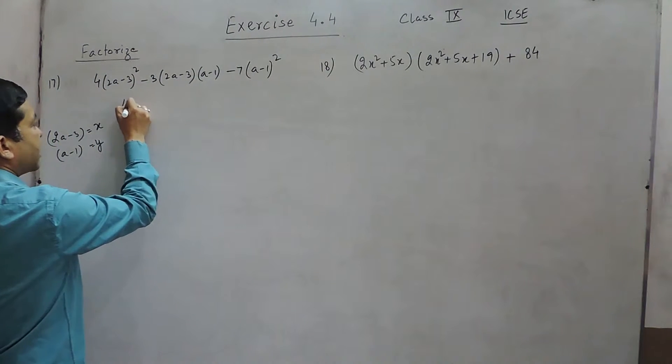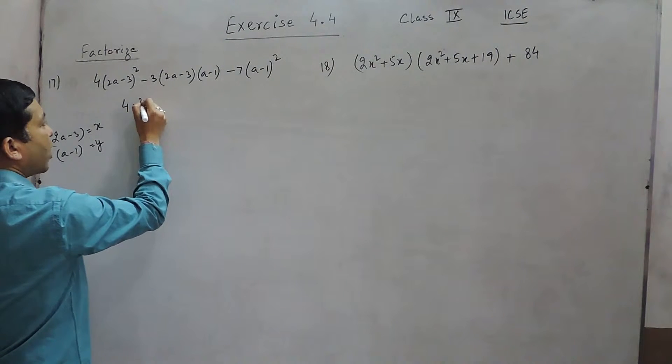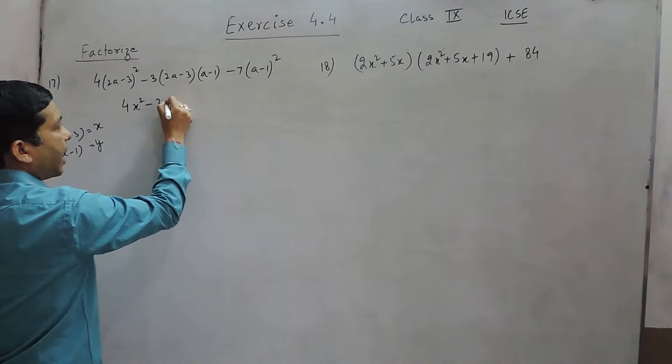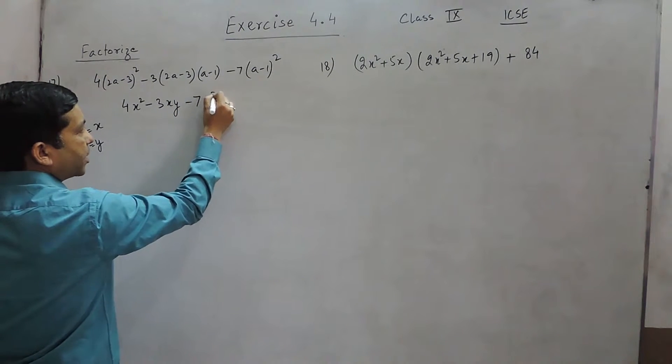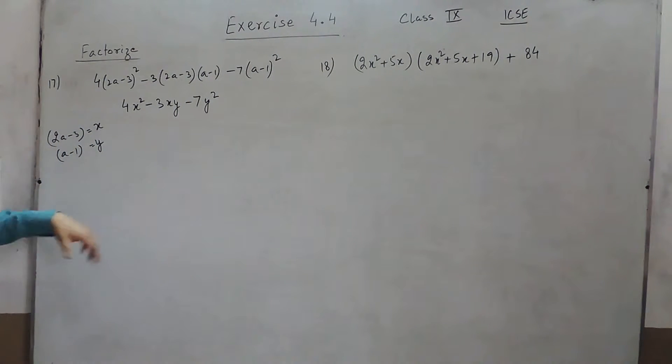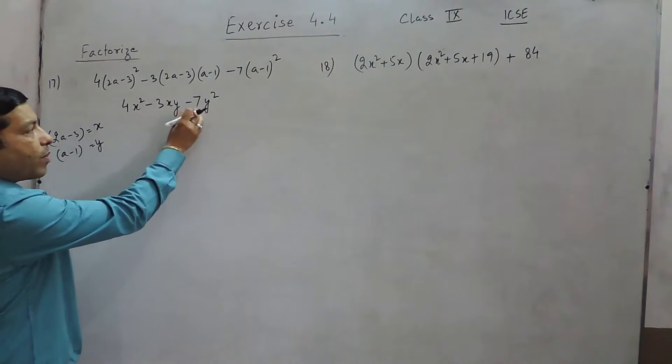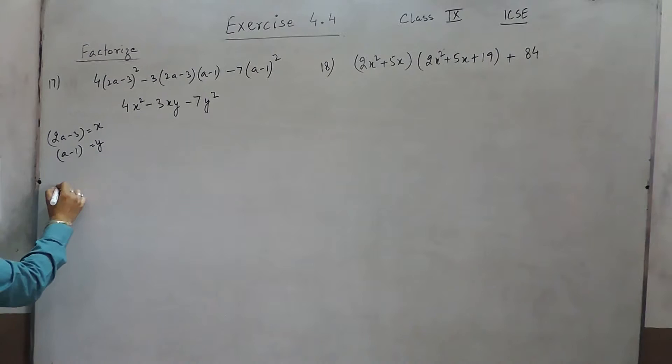So this equation can be written as 4x² - 3xy - 7y². This has been converted to the question which we have already done. Now 4 multiply by -7 is -28, so the multiplication should be -28 and the sum should be -3.